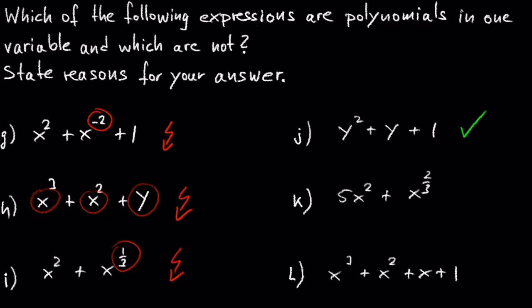In K we have 5x squared plus x raised to 2 over 3. Since 2 over 3 is not a whole number, this is not a polynomial. In L we have x cubed plus x squared plus x plus 1. This is a polynomial.